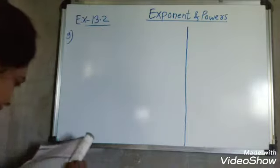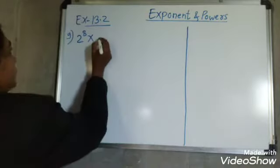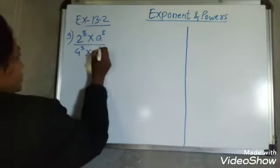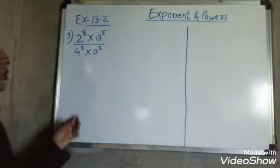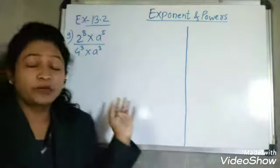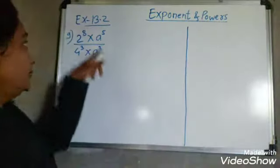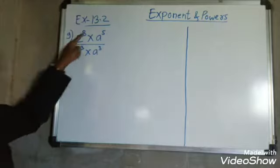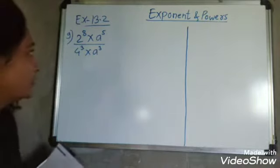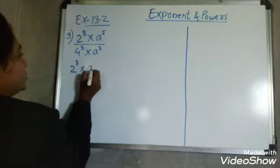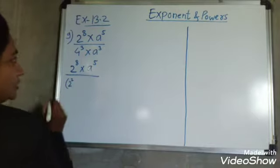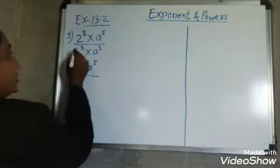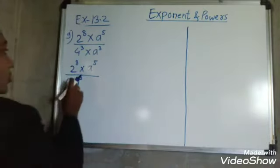Now our 9th example: 2 raised to 8 multiplied A raised to 5, upon 4 raised to 3 into A cube. Here, when solving, first check whether bases are same or exponents are same. We can convert 4 as 2 square. So I write 2 raised to 8 into A raised to 5 upon 2 square, and the existing cube outside, so it becomes 2 square with cube, giving 2 squared whole cubed, into A cube.